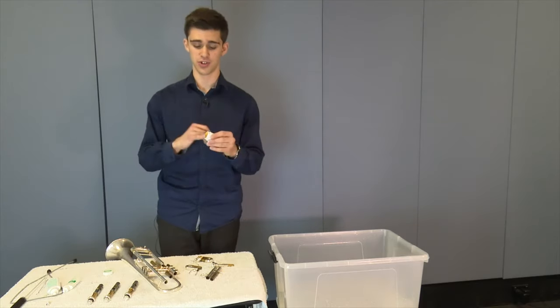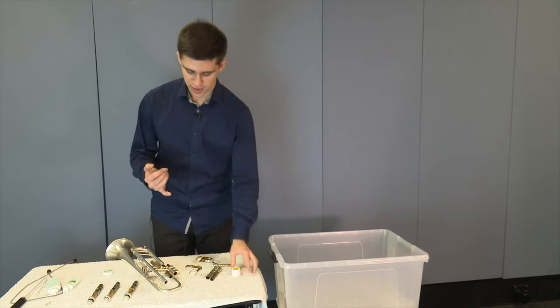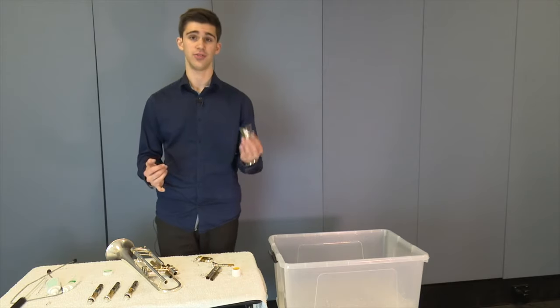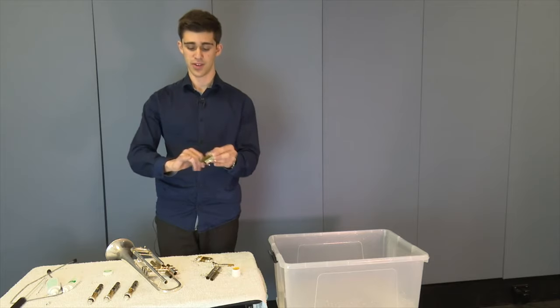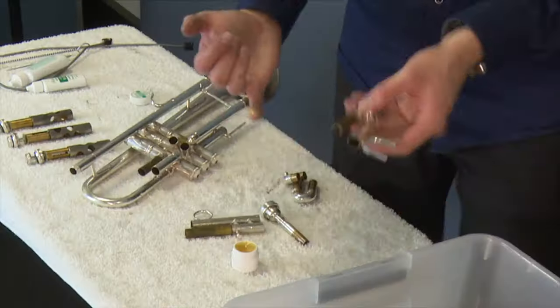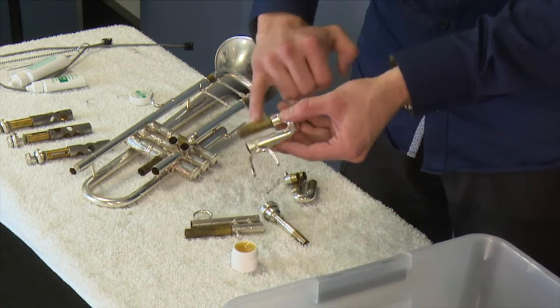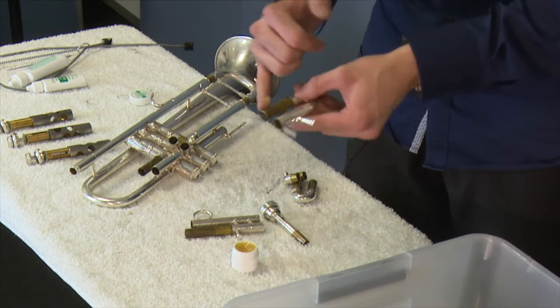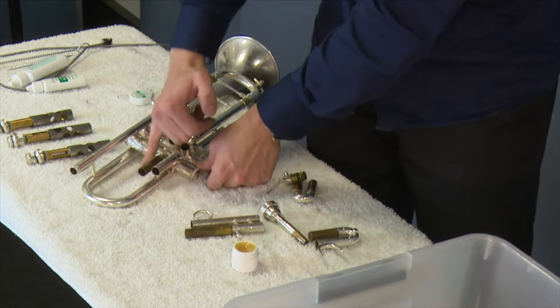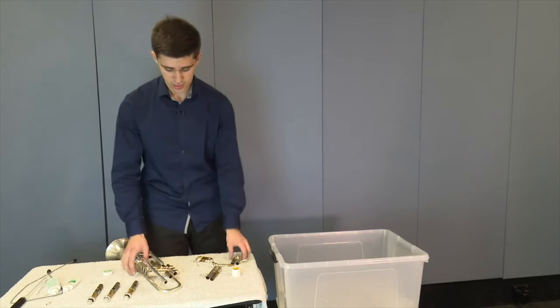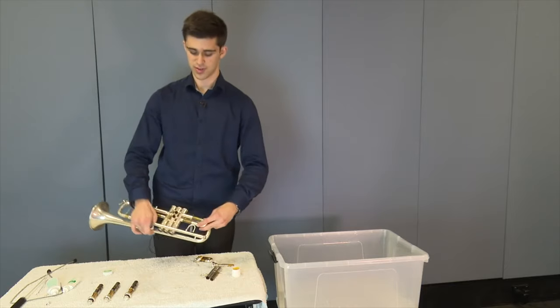What we're going to do now is get the same tuning slide grease and apply a tiny amount to the slide with the thumb hook. This was the slide that was closest to your mouthpiece. Just apply a tiny amount on the actual slide, only on the brass part, and onto the brass part of the instrument. We then just put it on.